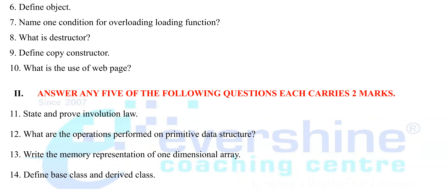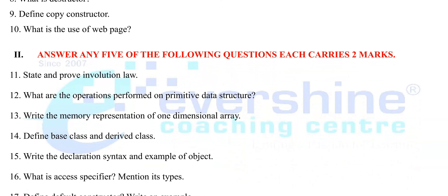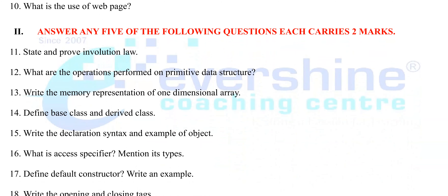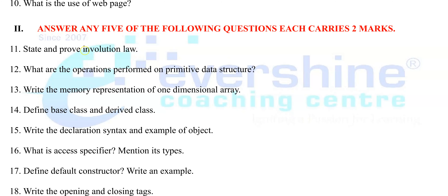Next, second section — answer any five of the following questions, each carries two marks: state and prove involution law, what are the operations performed on primitive data structure, write the memory representation of one-dimensional array, define base class and derived class, write the declaration syntax and example of object, what is access specifier and mention its types, define default constructor and write an example, write the opening and closing tags.